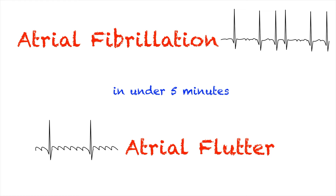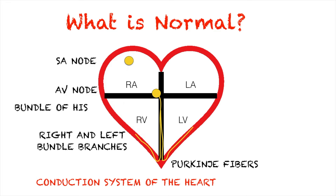So what is normal? The SA node starts the conduction from the right atrium. It goes to the AV node right here. And from the AV node, it travels through the bundle of His and continues through the right and left bundle branches. From here, they continue to spread within the apex of the heart, within the Purkinje fibers. If the conduction goes from the SA node all the way to the Purkinje fibers, the EKG will look something like this — your P wave, your QRS complex, and your T wave. When the conduction goes from the SA node to the AV node, that actually generates an impulse enough for the atria to contract, which causes these P waves.